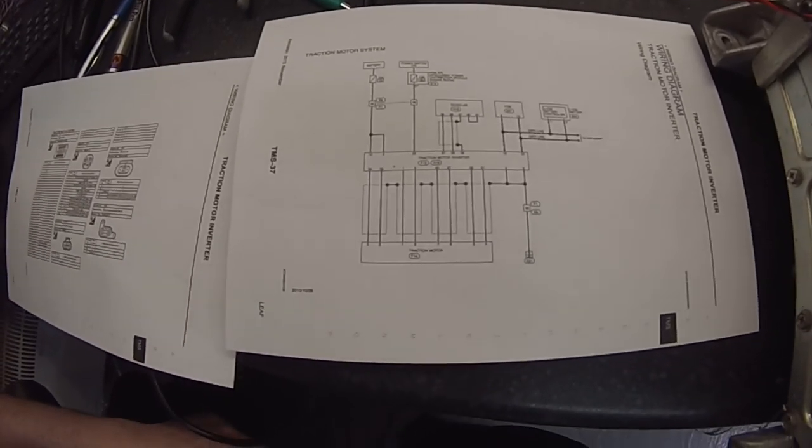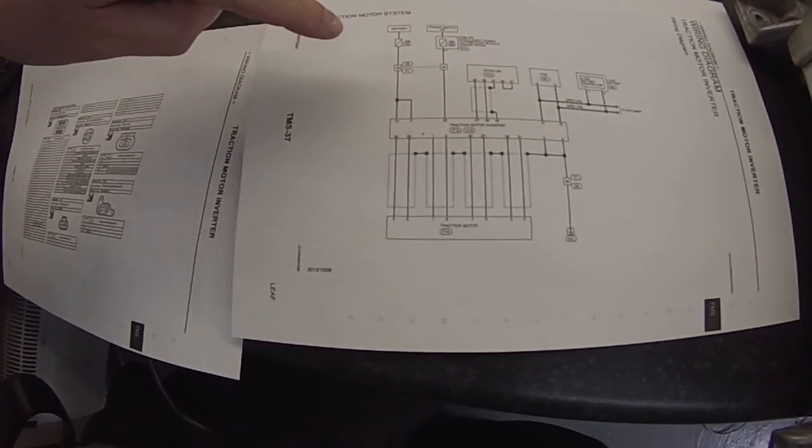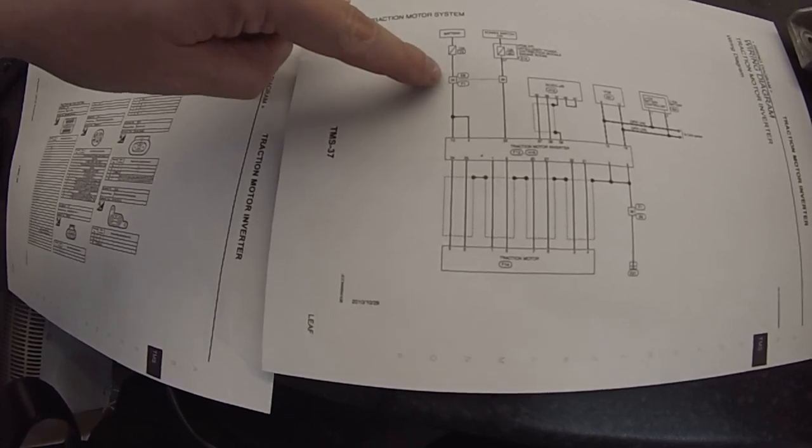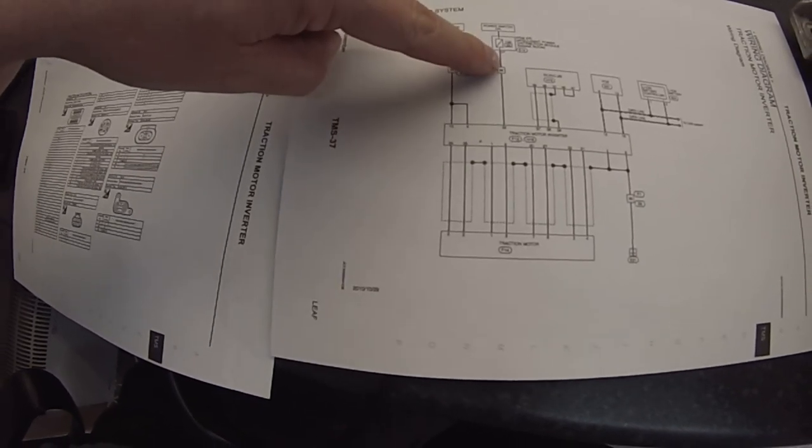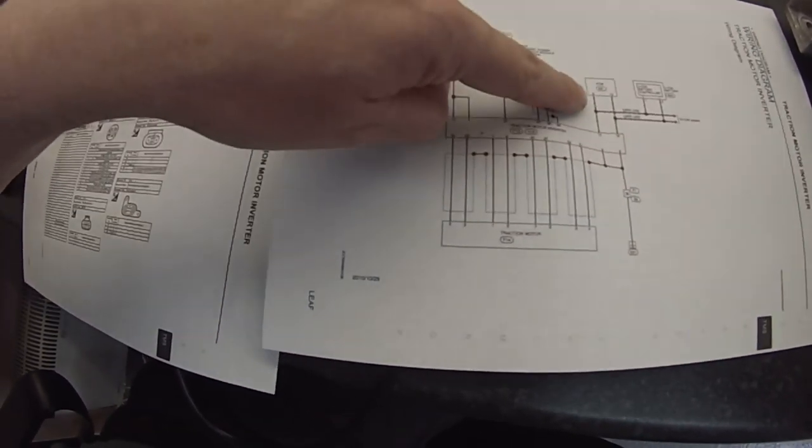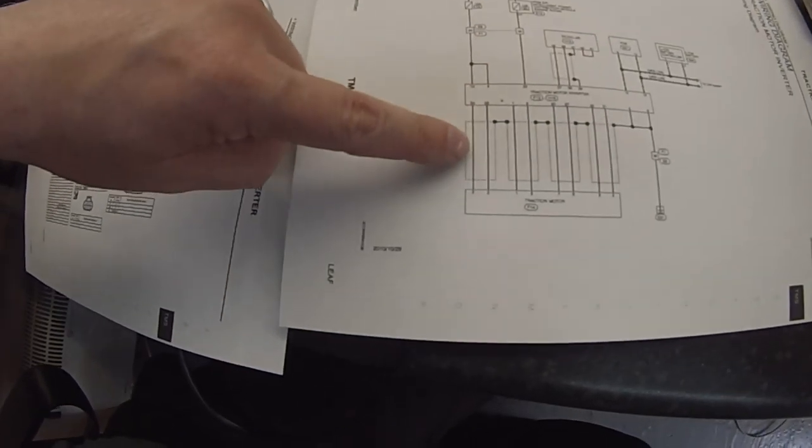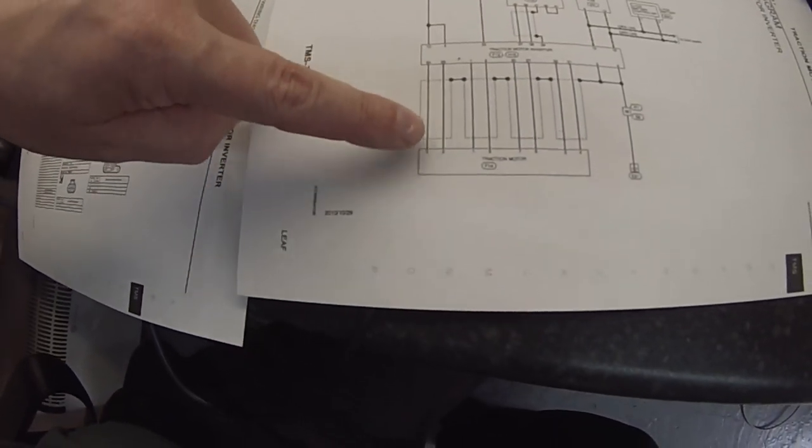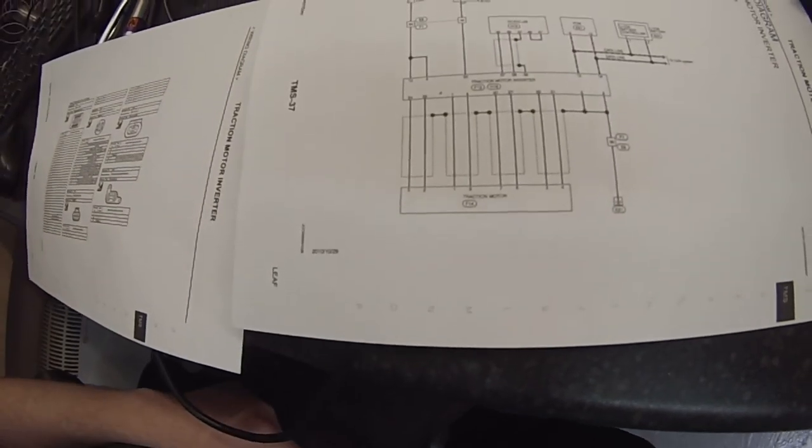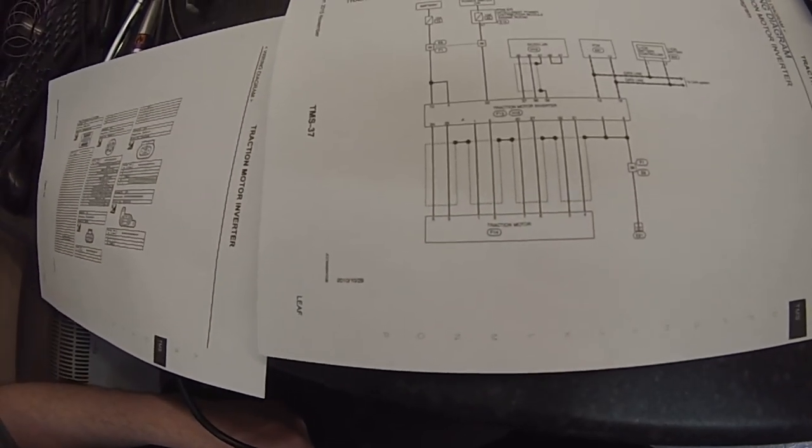So looking at the wiring diagram it's pretty straightforward in that all we need to do is to give ourselves permanent 12 volts, switched 12 volts, ground, CAN high, CAN low, and a connection here to the motor resolver and temperature sensor. So you know, quite simple.